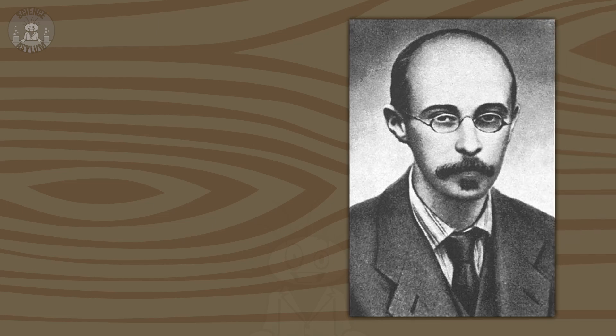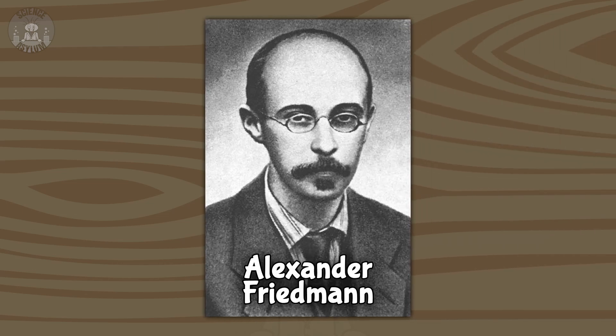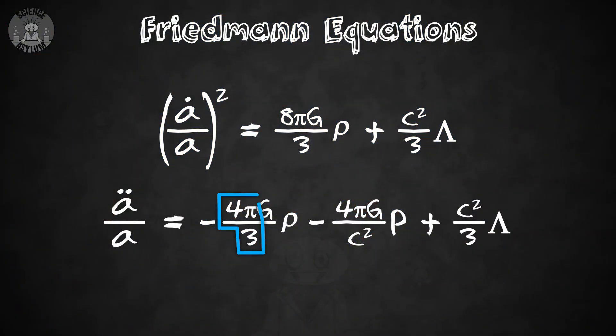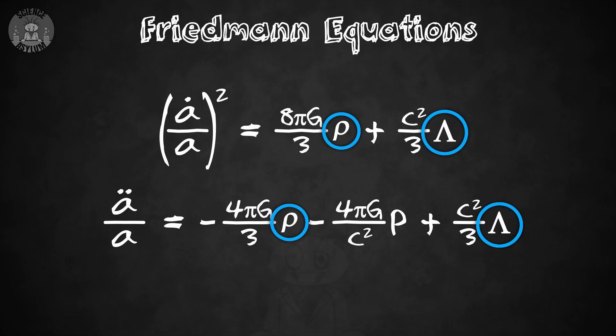In 1922, a guy named Alexander Friedman derived some equations — they are indeed called the Friedman equations. There's a lot going on in there, a lot of terms. The thirds come from the fact that we live in a three-dimensional space; four-thirds pi is the beginning of the equation for a spherical volume. There are lots of Greek letters too. These equations describe the growth of space, how it expands over time. Friedman had used general relativity to derive these equations — they came straight from the model of gravity that we had already tested a few years earlier.